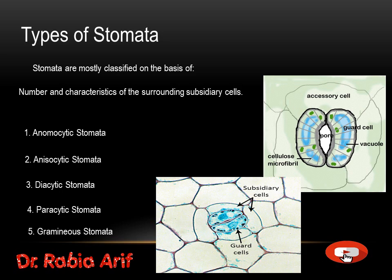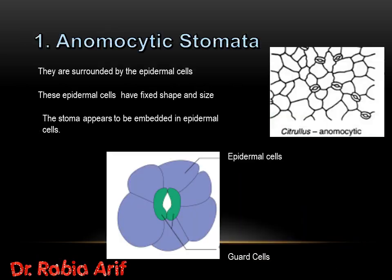The subsidiary cells are the accessory cells to the guard cells. The first type is anomocytic stomata. In the diagram you can see that there are the epidermal cells and the guard cells. This means that there are no subsidiary cells in this type of stomata, so the stomata have only guard cells, which are surrounded by epidermal cells.